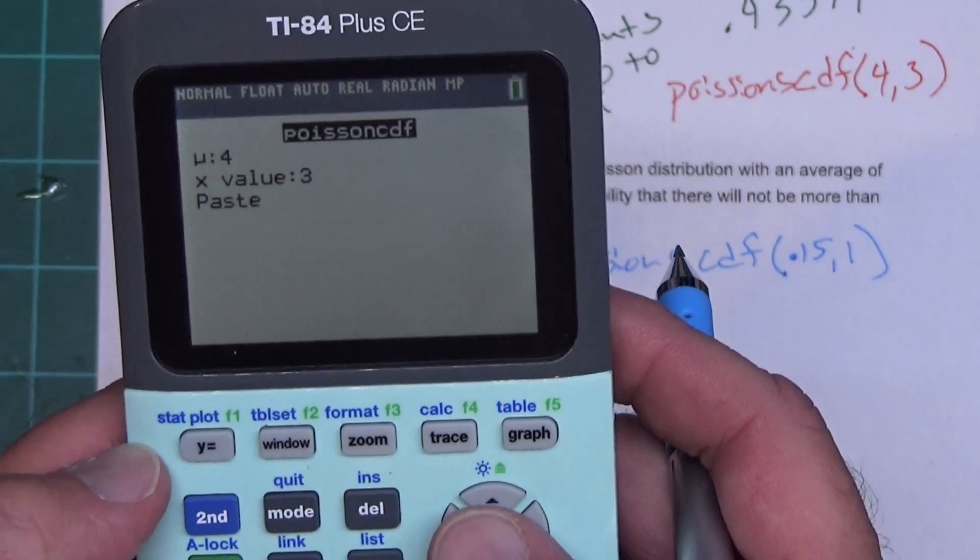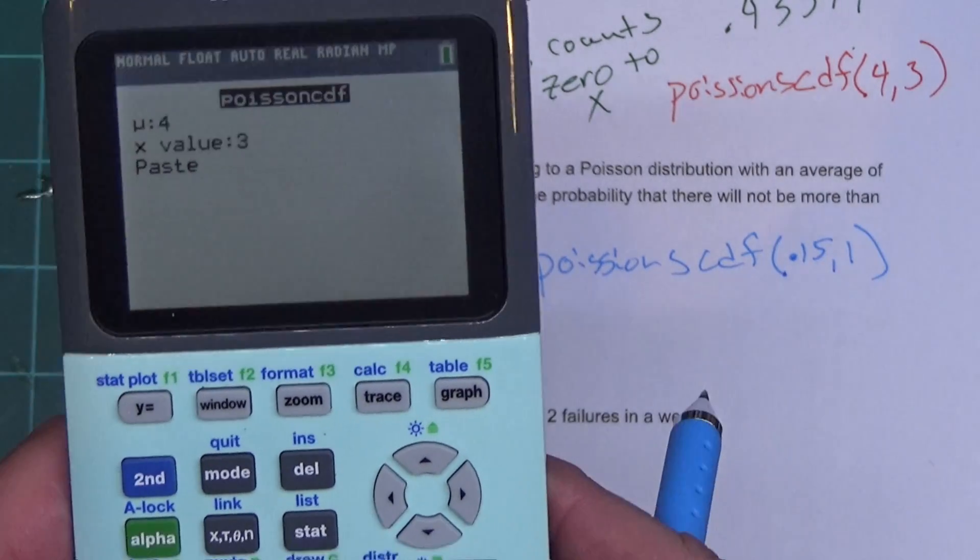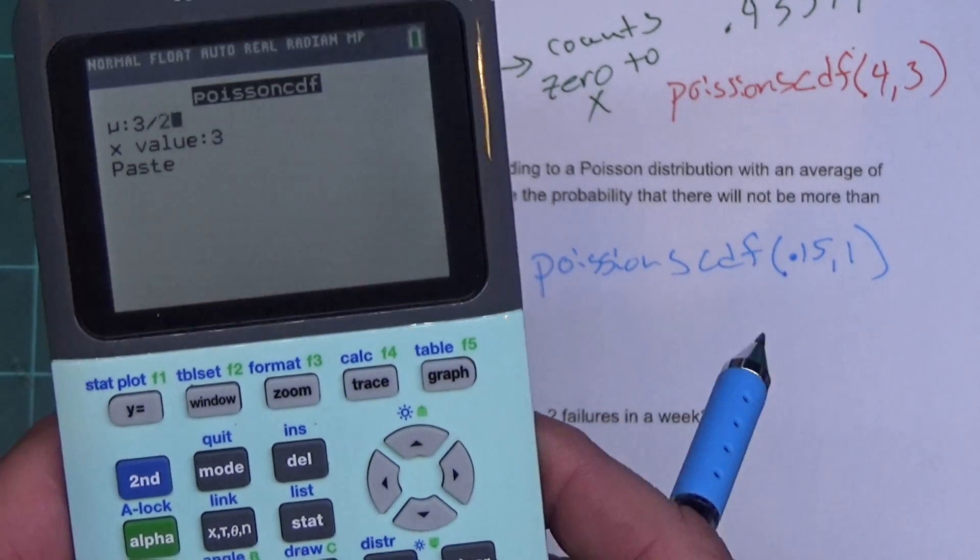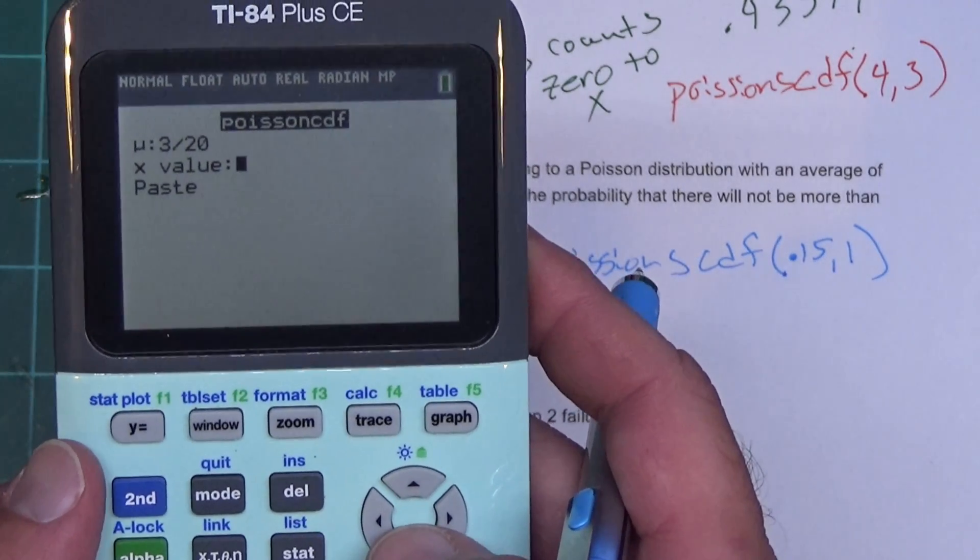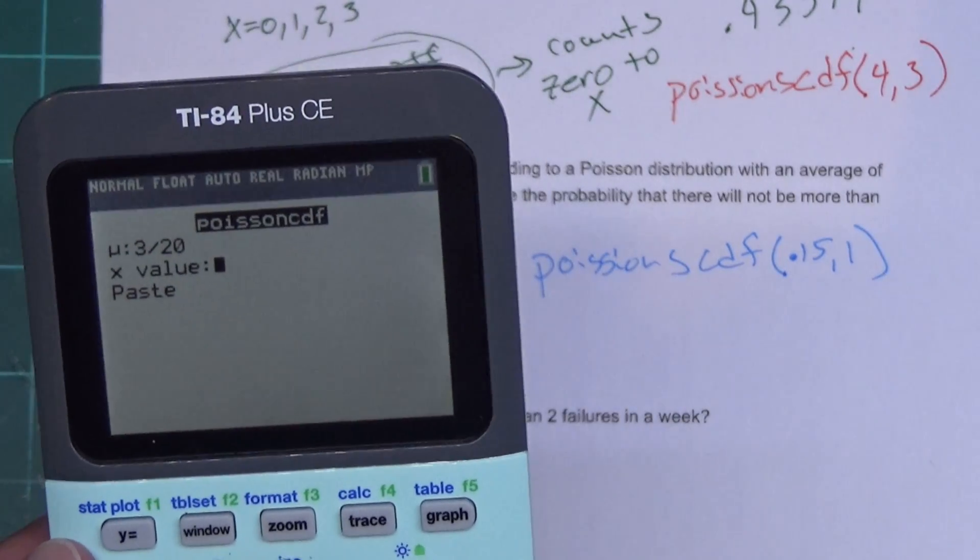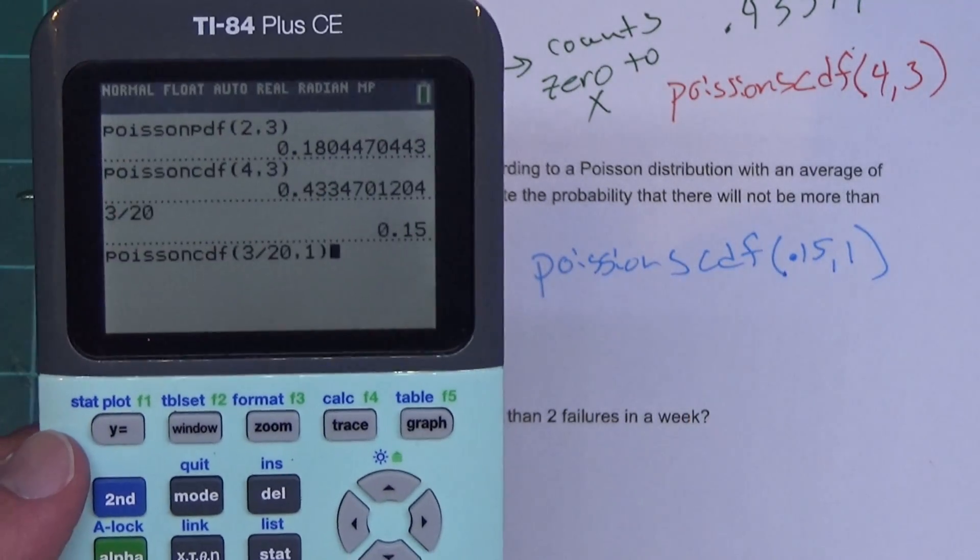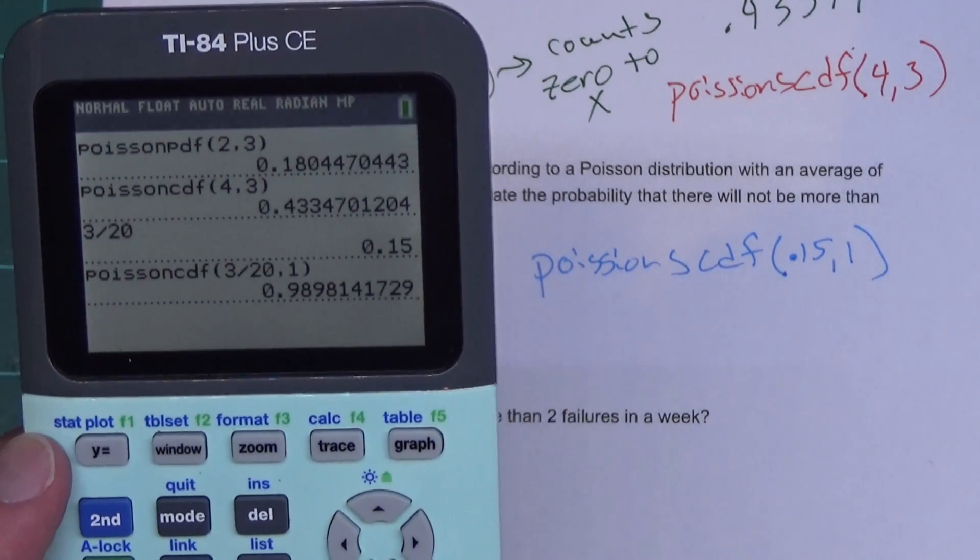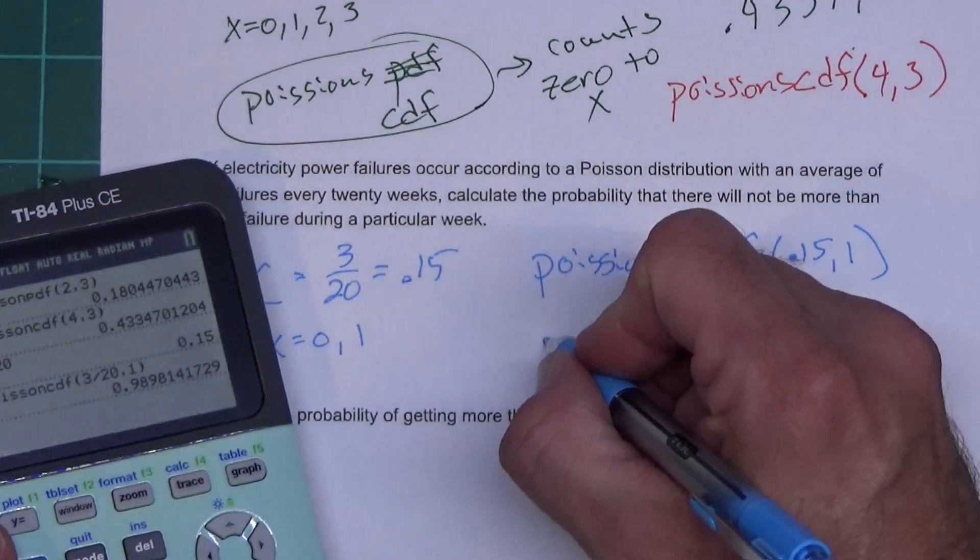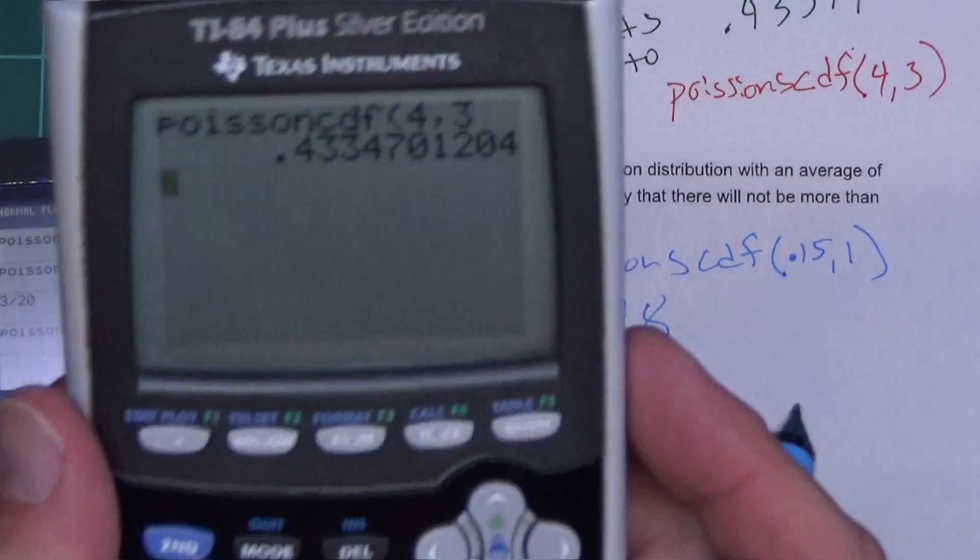For the older calculator, I'm going to type in 0.15 comma 1. On this one it's going to look a little bit different. So I hit my second distribution, hit the arrow button up to Poisson CDF, press enter. My mu - and here on this calculator you can do it, on the other one too - 3 divided by 20. You can type that in there. You'll notice the calculator left it - I didn't expect that. Our X value is one. We go to paste, calculator left it, press enter, and I'm getting 0.9898.